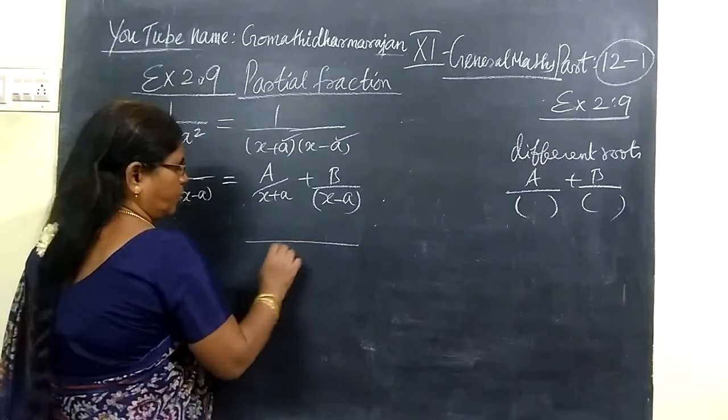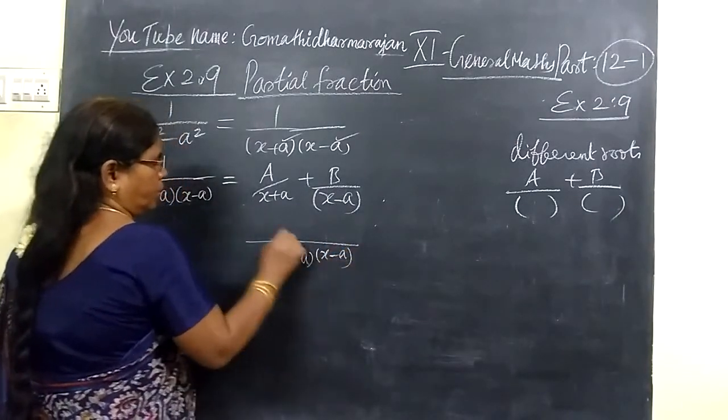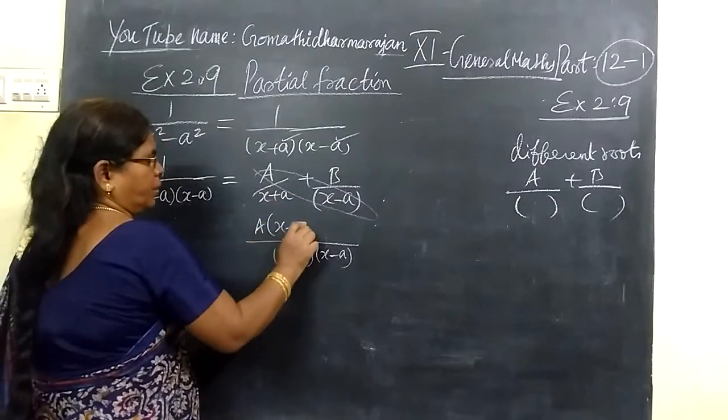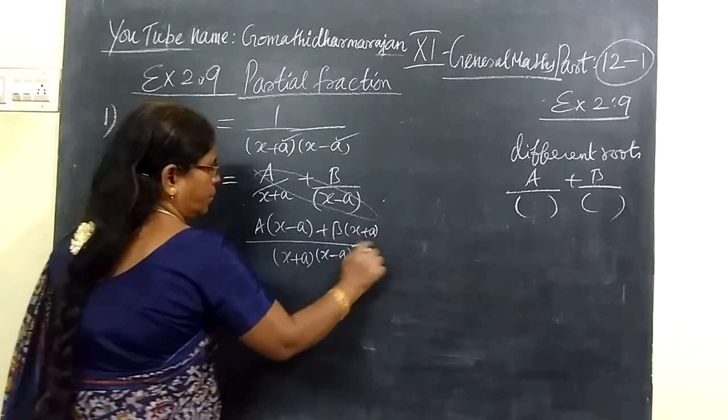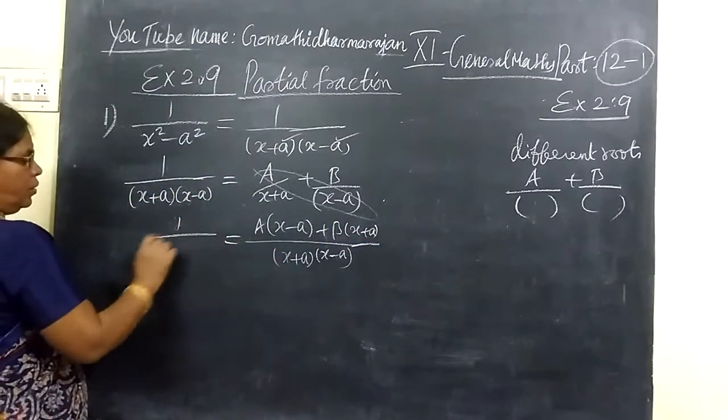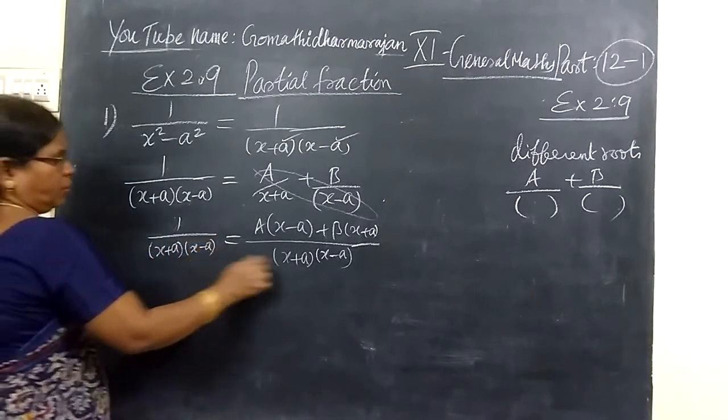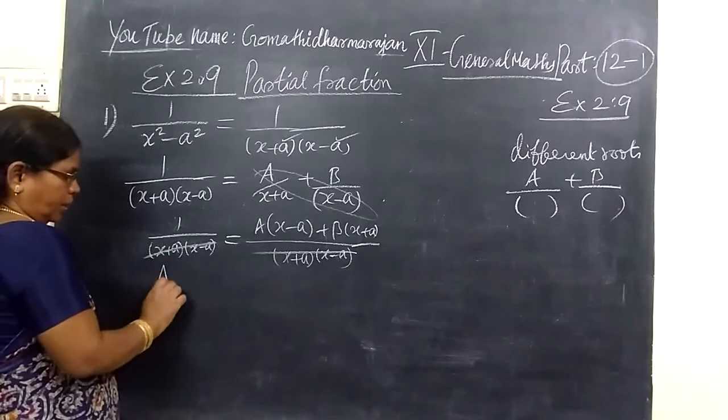So what is the algorithm of this? x plus a, then x minus a. Cross multiply. So if you cross multiply, we write A(x minus a), then B(x plus a). So this way you write: 1 by (x² minus a²). You can cancel the denominator when they are equal.